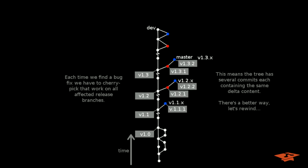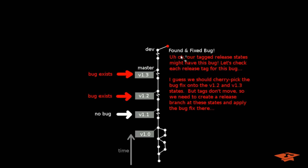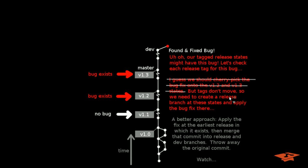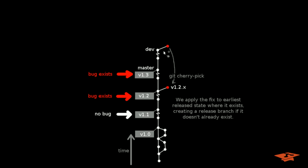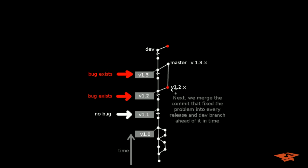So we're going to go over a whole other approach to doing this exact same thing. But first we need to rewind a little bit. Remember when we were at the state where we found and fixed the bug off the dev branch? Instead of cherry picking the bug fix onto the affected release branches, let's do something different. We're going to apply this fix at the earliest release in which it exists first, then we're going to merge that commit into the release and dev branches, and then we're going to throw away the original commit. It sounds complicated but I'll walk you through it. First thing we do is git cherry pick the content onto the earliest release state where it exists.